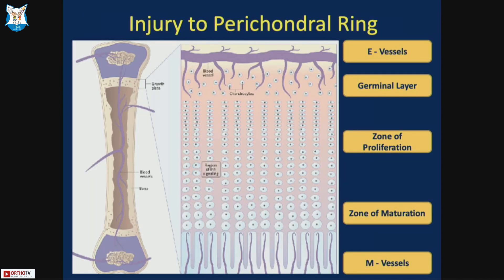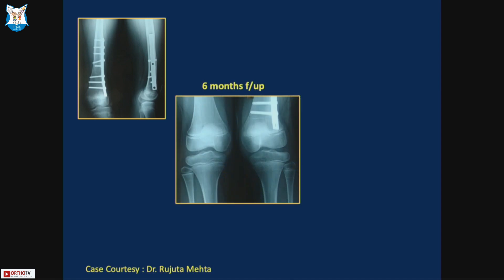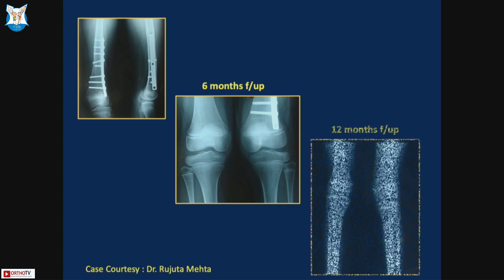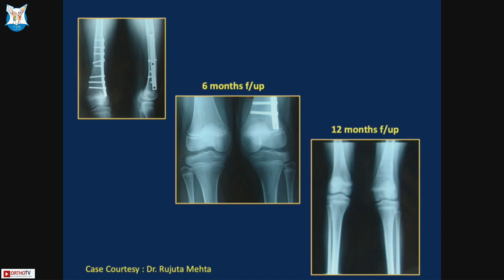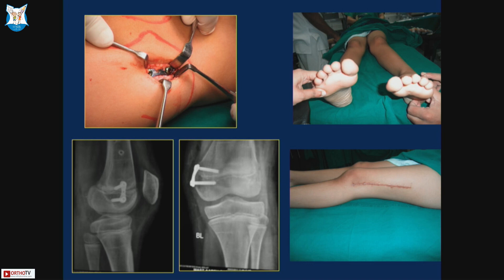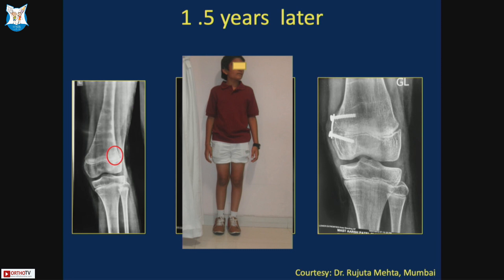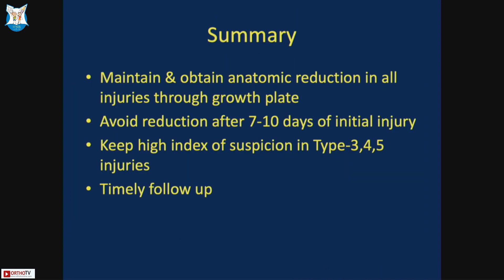Injury to the perichondral ring is another important concern. A child who underwent femoral plating for a fracture showed progressive valgus of the distal femur at 6 and 12 months follow-up. MRI revealed the primary surgeon had placed a screw in the epiphysis, creating a tether on the perichondral ring. The primary surgeon then performed growth modulation, successfully correcting the deformity one and a half years later. The perichondral ring is therefore an important structure to monitor.